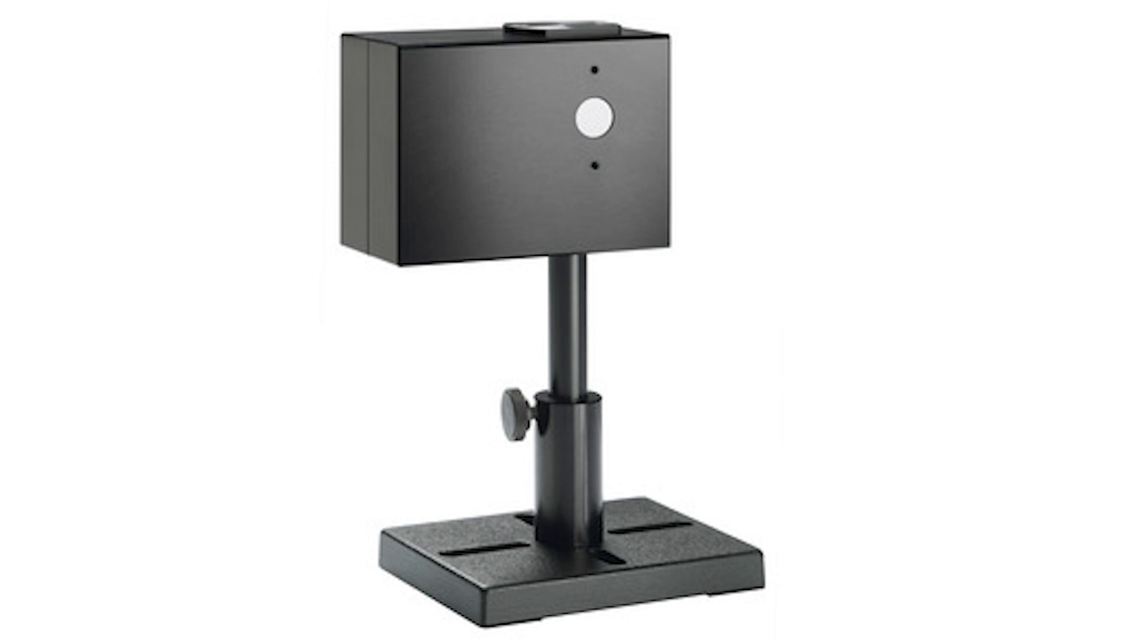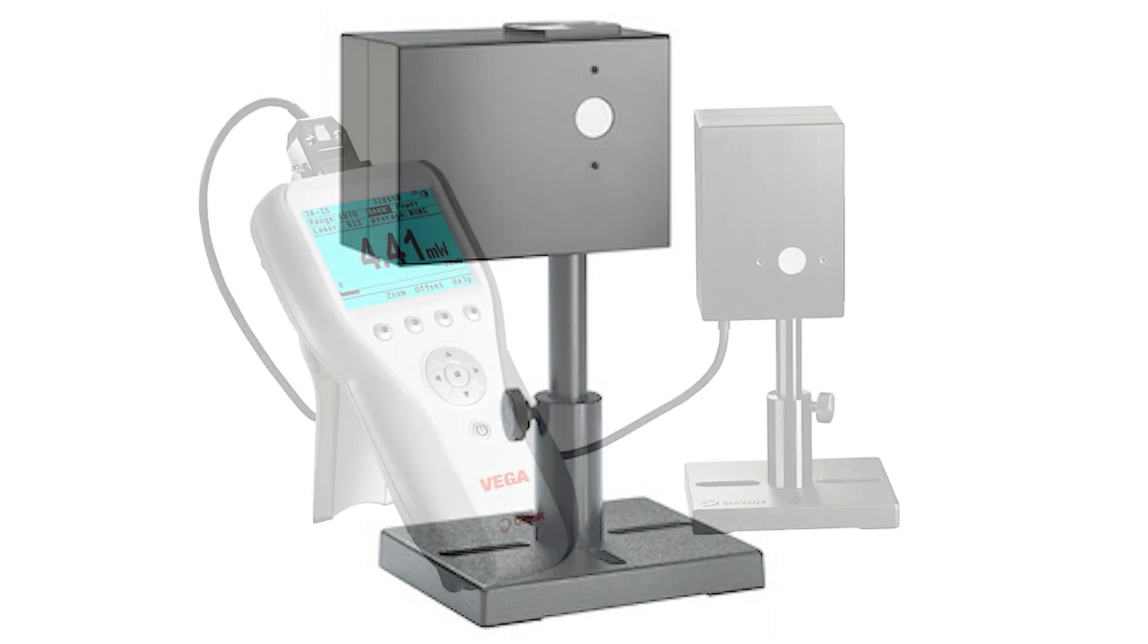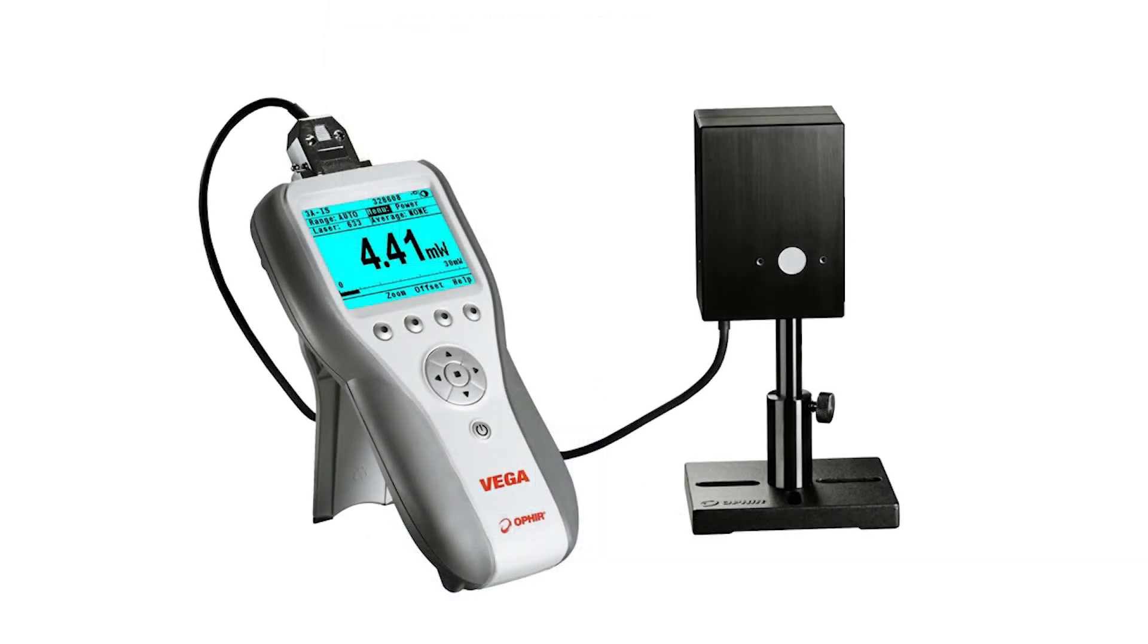The Ophir 3AIS is an integrating sphere sensor consisting of a small 1.6-inch integrating sphere and a built-in photodiode detector. The whole device is calibrated over a wide spectral range and is configured as a standard Ophir smart sensor compatible with any standard Ophir smart meter.